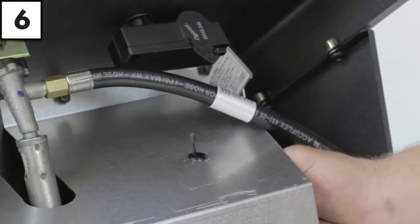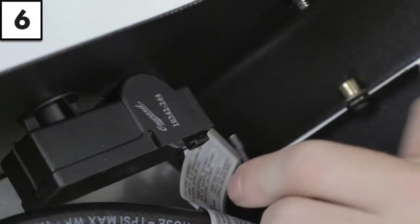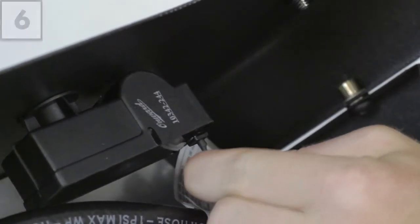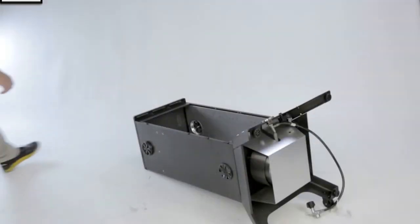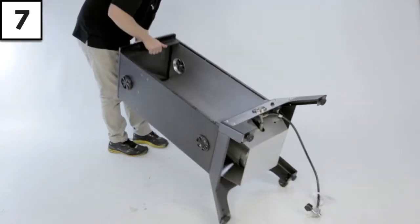Step 6: Attach the igniter electrode from the burner body to the electronic igniter. Step 7: Stand the cabinet assembly on its feet.